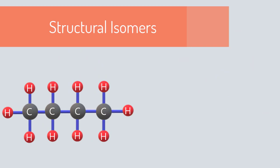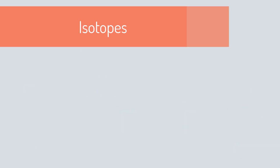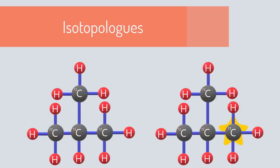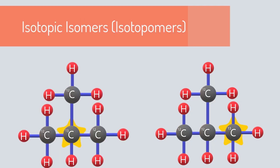In this example, butane and isobutane are structural isomers, the carbon-12 and carbon-13 atoms are isotopes of carbon, isobutane with carbon-12 and carbon-13 are isotopologues, and the two configurations of isobutane with carbon-13 are isotopic isomers, or isotopomers. All of these relationships are important in chemistry and can result in different physical and chemical properties of the molecules.